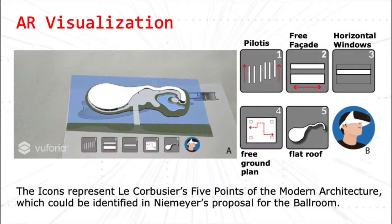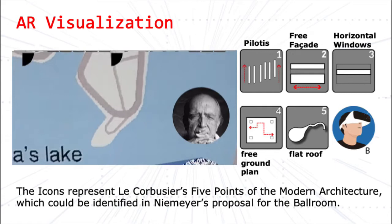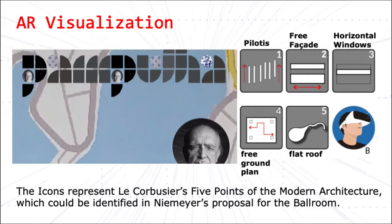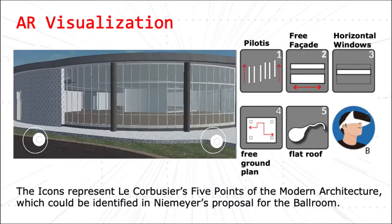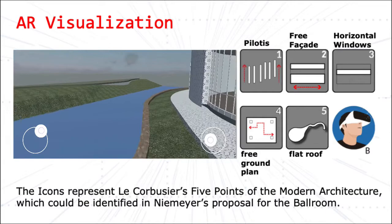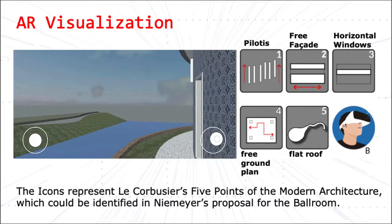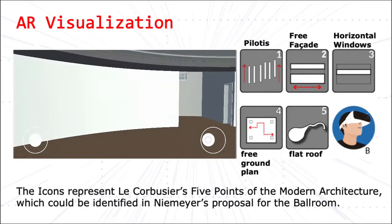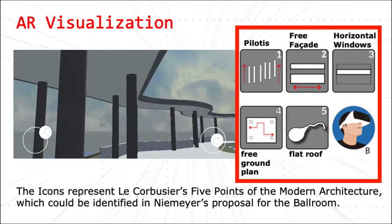Smartphones and tablets already support these three components and have been used in many AR applications. For a successful augmented reality experience, the AR should bring new information to augmented objects, the digital models should allow real-time interaction, and they should convey accurate information. The intention was never to replace the experience of seeing these buildings in person, but to bring accurate 3D models, the surroundings, and modern architectural supplementary information — a view more complete than traditional media like videos and photos. Visitors can walk through the buildings, enter rooms, and look through windows, and interact with the five architecture icons.